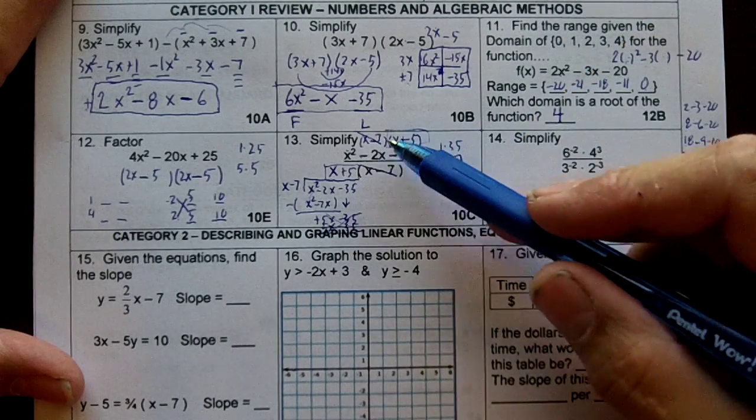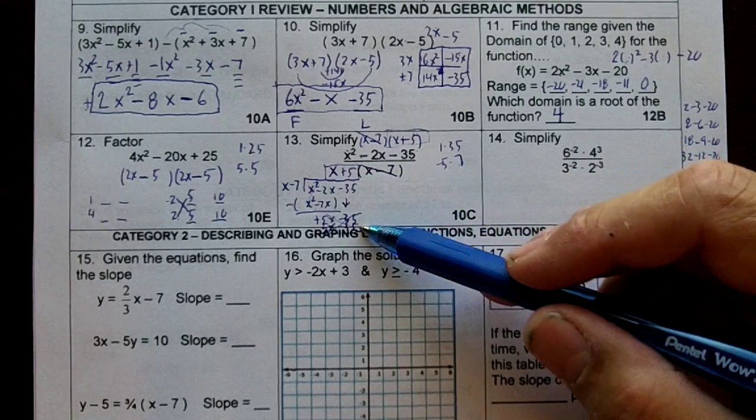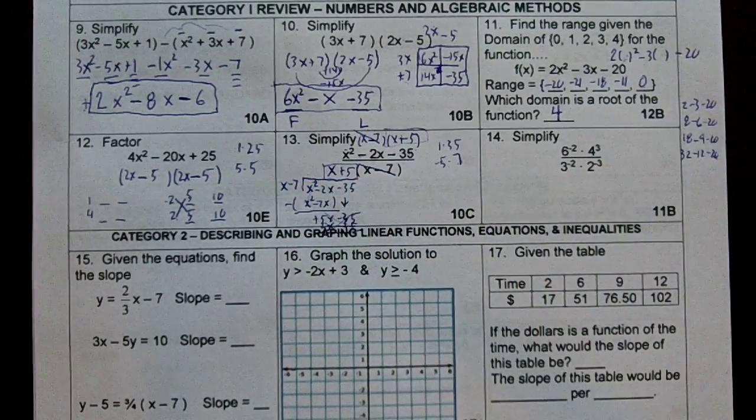So you could either factor this and cancel out or you could divide. Sometimes if you get a remainder, you've got to divide in long form like this.